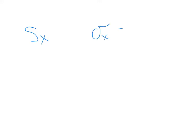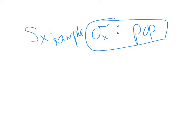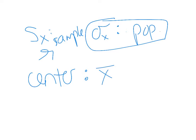A few more points on standard deviation. When you put data in your calculator, you'll see two standard deviations — one uses a sigma symbol for the population, and the other is S for the sample. Very rarely will we have every single data point in a population, so we will almost always use the sample standard deviation. Also, standard deviation measures spread around the mean, so you can only use standard deviation when your measure of center is the mean.